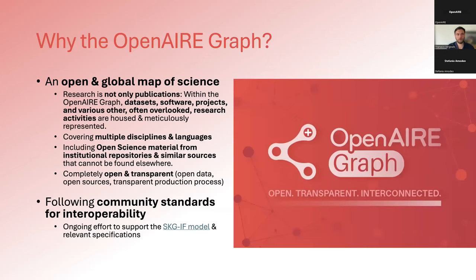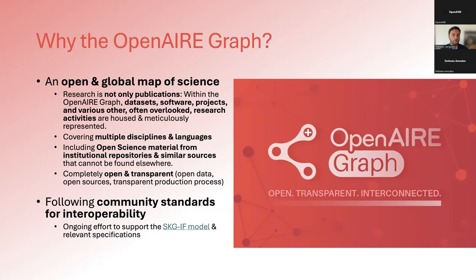The OpenAIRGraph matters because it is an open and global map of science. It tries to cover not only publications — as most other initiatives do — but also many types of research outputs and activities currently overlooked, like datasets, software projects, peer reviews, project deliverables, and more. The OpenAIRGraph meticulously represents all these types of contributions and activities, something you cannot easily find in another data source.